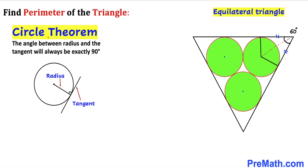Now let's recall the circle theorem: the angle between the radius and the tangent will always be 90 degrees, as you can see in this diagram. Here we have the radius and the tangent and their angle is 90 degrees. So in our case, this angle is 90 degrees and this angle is 90 degrees as well, since these are two radii and these are our tangent lines.